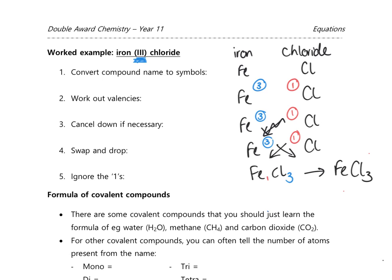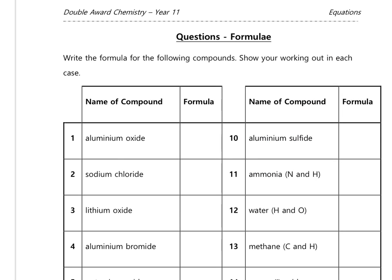Now pause to try examples one to ten on page eight, writing your working in the box with the name and your final formula in the empty box. Looking at example one — aluminium oxide: Al from aluminium, O from oxygen. Aluminium is group three (valency three), oxygen is group six (valency two). You can't cancel 3:2 down any further. Swap and drop: Al₂O₃. No ones to ignore, so the final formula is Al₂O₃.